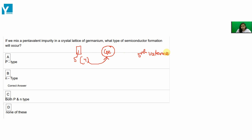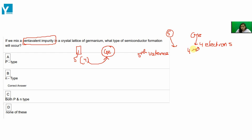Because germanium has 4 electrons in its valence shell. So what happened? The pentavalent impurity, which has 5 electrons in its valence shell, used 4 of them to form covalent bonds. Its 4 electrons made bonds. Now that one remaining electron is free to move.